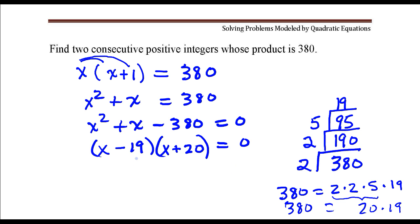So let's check this. Negative 19 times positive 20, that's a negative 380. And then the sum of these two numbers would give me a positive 1. So that's the correct factorization.